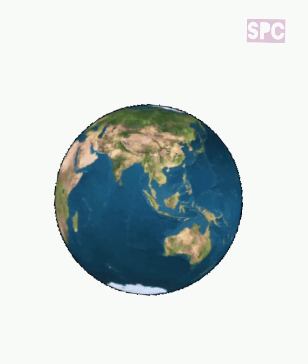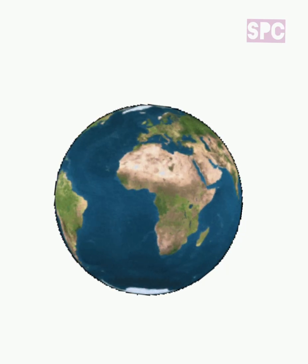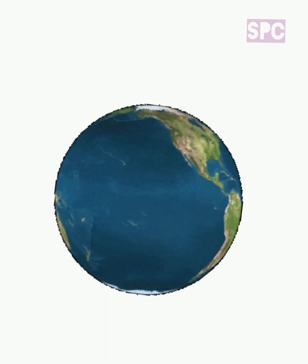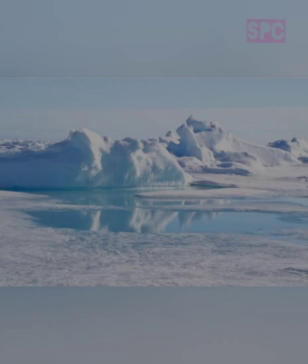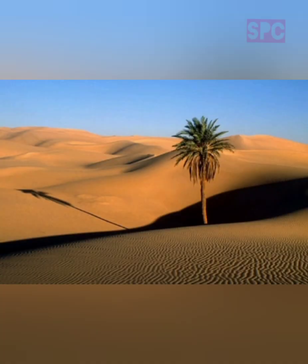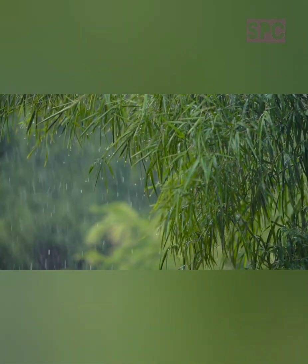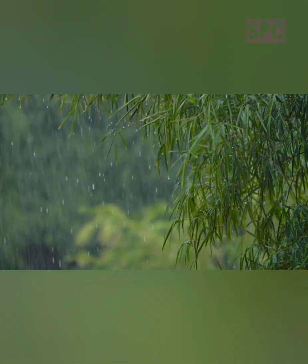Good morning children. Earth is the planet on which we all live. But do we have the same climatic condition across all parts of the earth? No. There are some places which are throughout covered with snow, some are extremely hot, and there are some places which receive a lot of rainfall. So children, different places have different climatic conditions.